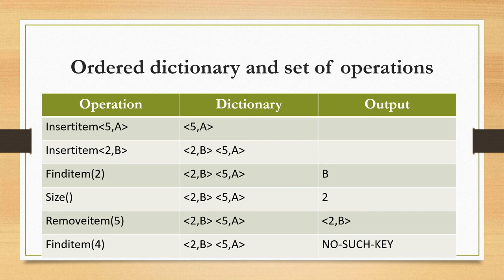Size: it is the size of the dictionary. As we inserted 2 values, the output will be 2. Remove item of key 5 — the dictionary contains (2, b) and (5, a). After removing (5, a), the output will be (2, b). Find item of key 4 — we inserted only (5, a) and (2, b), so key 4 is not present and it gives the output as no such key.